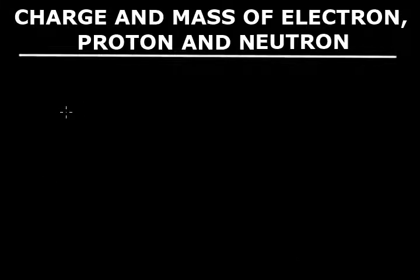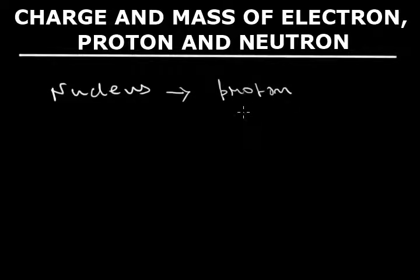Hello friends, let us now discuss the charge and mass of electron, proton, and neutron from the Bohr-Rutherford model. It is clear that the nucleus part of the atom contains two particles named proton and neutron.